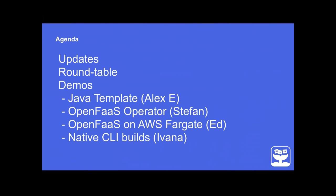We've got four demos for you today. That ranges from showing you a Java template we've been working on, through to the OpenFaaS operator, then OpenFaaS on AWS Fargate with Ed, and finally Ivana has something interesting to show us with the CLI that lets you build functions and add additional modules - for example, if you have a C++ build chain to compile some Python code.